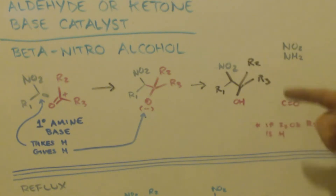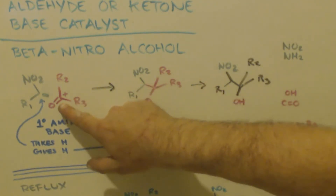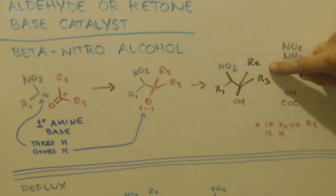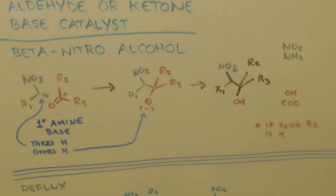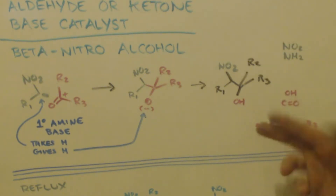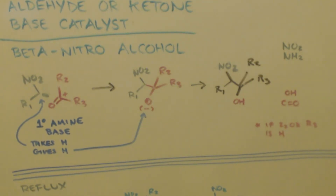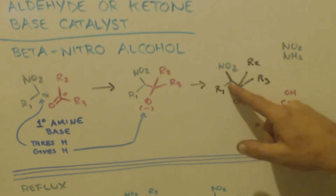Or you can oxidize the alcohol to a carbonyl group, making it into a ketone. However, on my example you can't do that because it's a tertiary alcohol — you cannot oxidize a tertiary alcohol. But if you started with an aldehyde instead of a ketone, one of the R groups would be hydrogen, and then you could oxidize it up to a ketone. What we actually want to do is make that hydroxy group into a double bond.